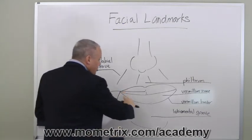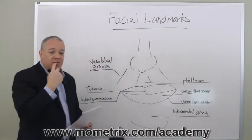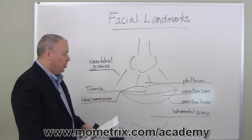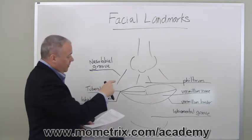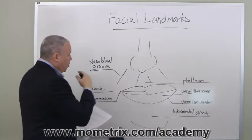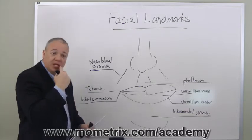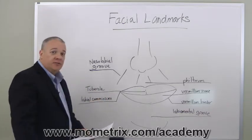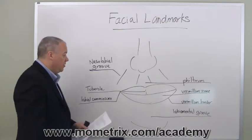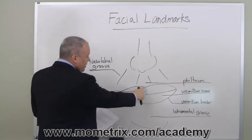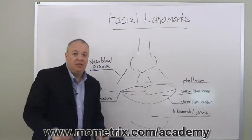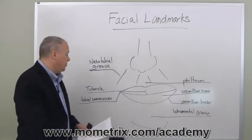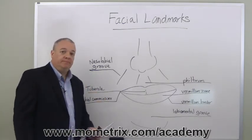The area just outside of the lips proper — the outer edge of the lips — is called the vermilion border. Along with that, the corners of the mouth are called the labial commissures. And right here in the very center of the upper lip, most people have a little protrusion of the skin, and this protrusion is called the tubercle.